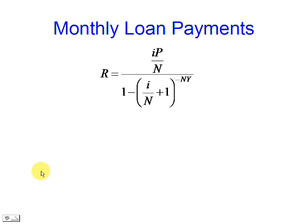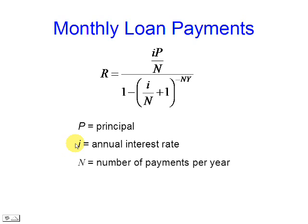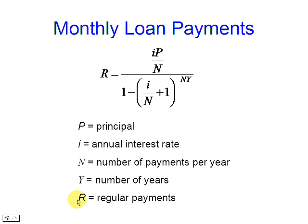This is the formula to be used. P is the principal. I is the annual interest rate. N is the number of payments per year. Y is the number of years. And R is the regular payments.